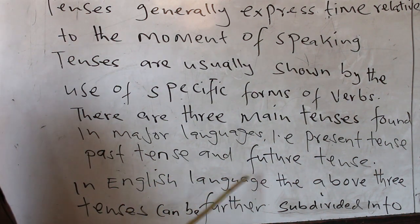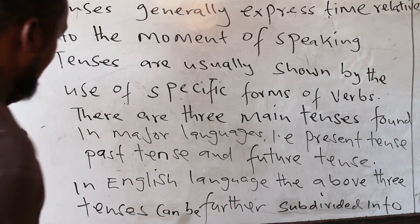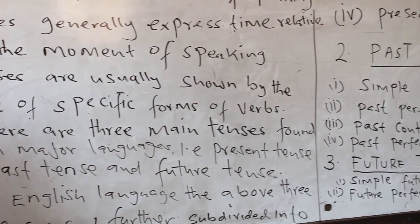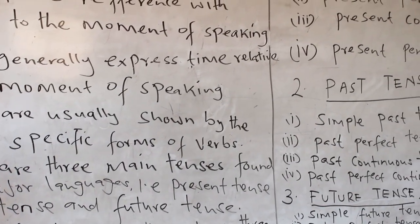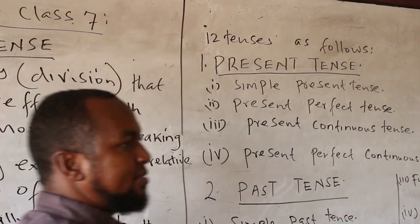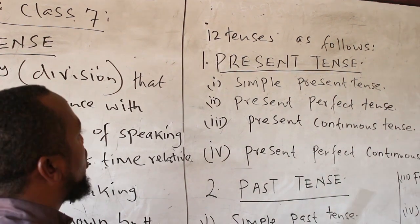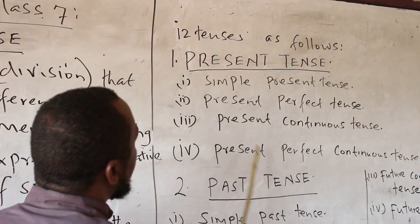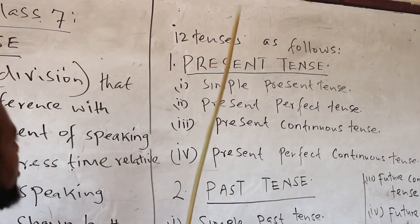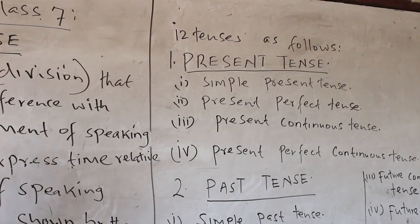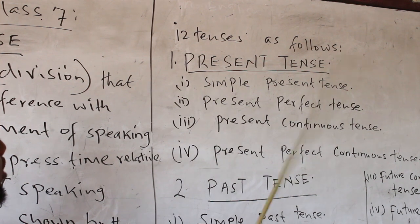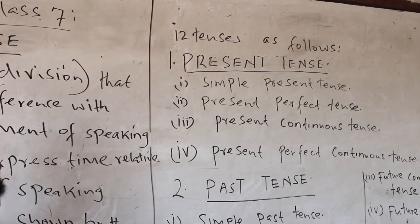In English language, the above three tenses can be further subdivided into twelve tenses. The first one, present tense, is subdivided into simple present tense, present perfect tense, and present continuous tense. Each one of them we are going to explain in detail later.